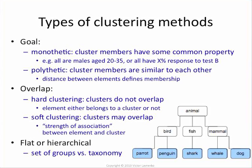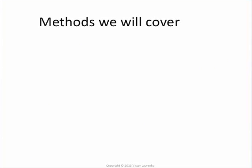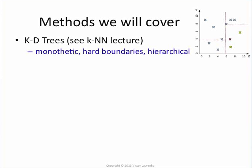Three different ways to categorize clustering methods. Which methods are we going to talk about? Well, believe it or not, we actually have seen one clustering method already. If you think back to the nearest neighbor lecture, we had a method called KD-trees, and we used it for speeding up the finding of nearest neighbors, and we said that it's a good method in low dimensionality.